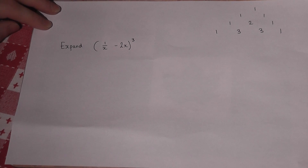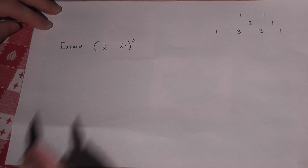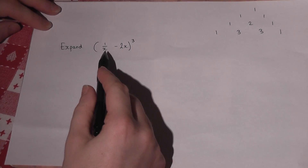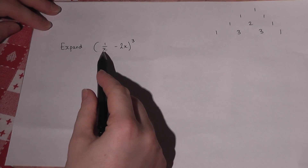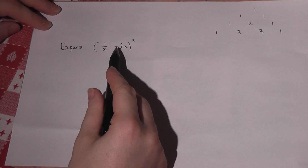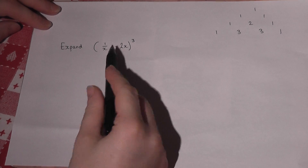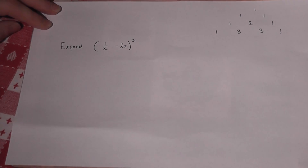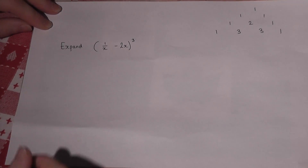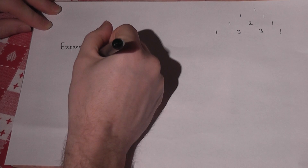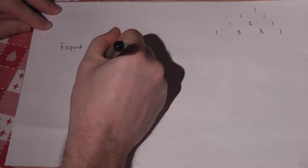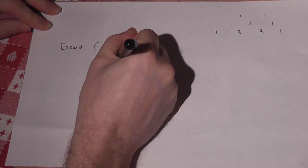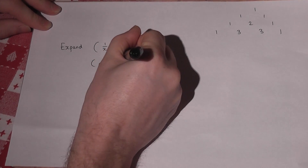This video looks at a slightly harder expansion involving fractions and negatives, but still using Pascal's triangle. The trick here is to consider (a + b) cubed.